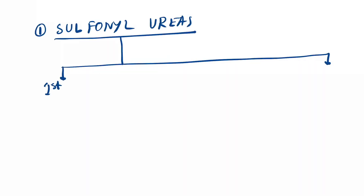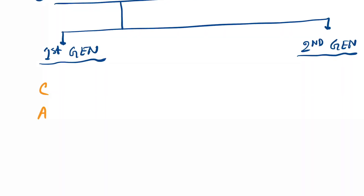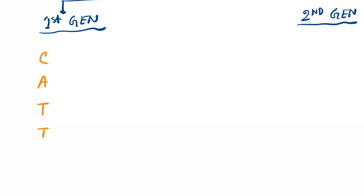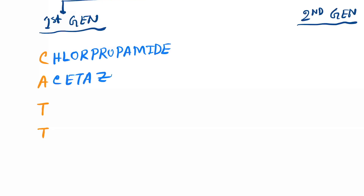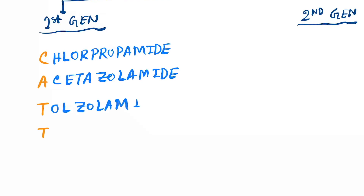First generation — remember the mnemonic C-A-T-T: C for chlorpropamide, A for tolazamide, and two T's for tolazamide and tolbutamide.